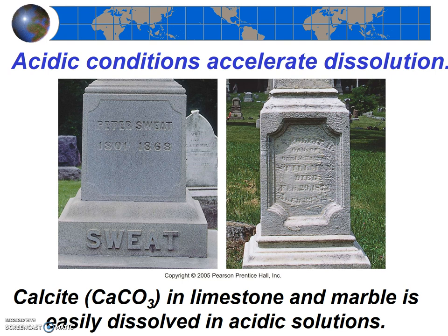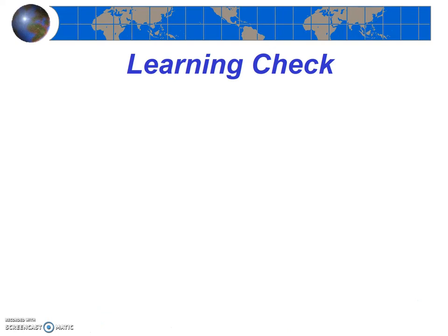Limestone is commonly used as a building material as well, but it's also used in the making of cement. So any building that's got cement in it, or any bridge or road that has cement — which is most — is also susceptible to this dissolution. As usual, I encourage you to stop the video here and be sure that you can answer some fundamental questions about chemical weathering.